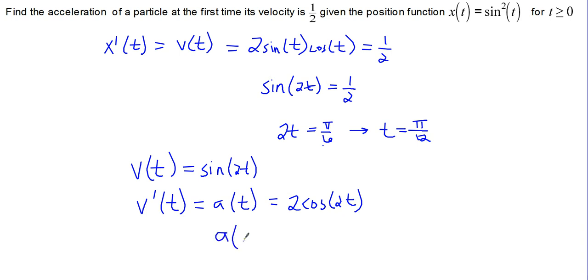And to evaluate that at pi over 12 should give us 2 times the cosine of 2 times pi over 12. 2 times pi over 12 is pi over 6, and the cosine of pi over 6 is root 3 over 2. So we end up with 2 root 3 over 2, or root 3. So the acceleration of our particle when its velocity is first equal to one-half is the square root of 3.